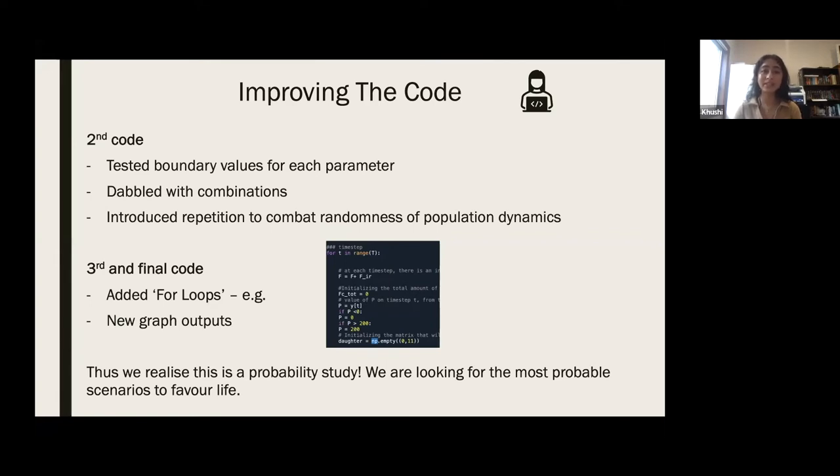Thus, we have identified the conceptual design of this code and that we are in fact seeking the most probable outcome, the most exemplar conditions which, no matter how many times we run the code, would continuously favor evolution. It is a probability study and a probability study calls for repetition.